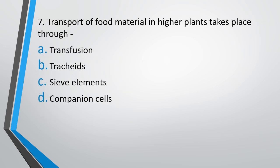Question number 7: Transport of food material in higher plants takes place through — transfusion, tracheids, sieve elements, or companion cells. The correct answer is option C, i.e. sieve elements.